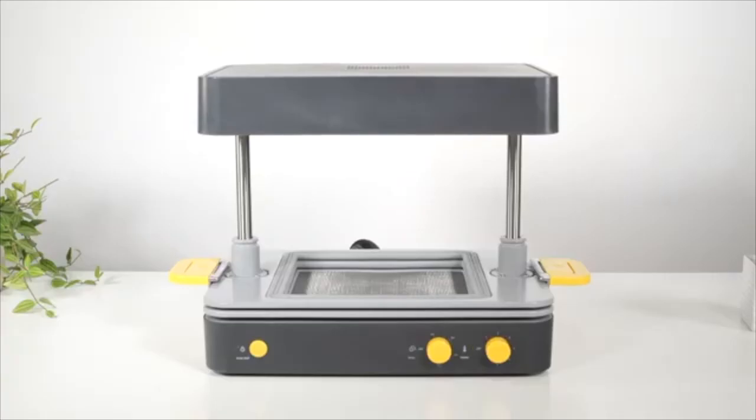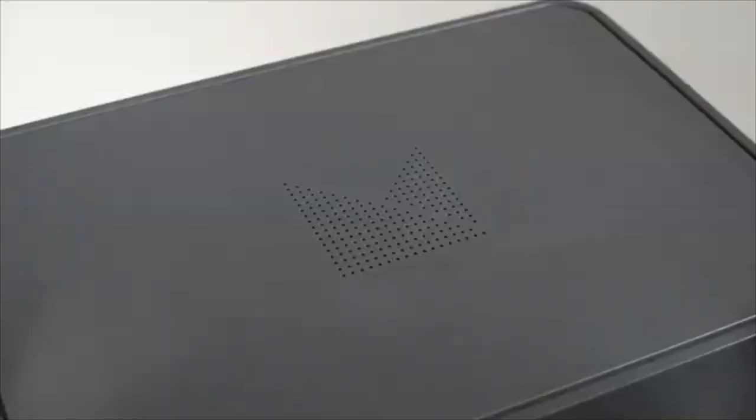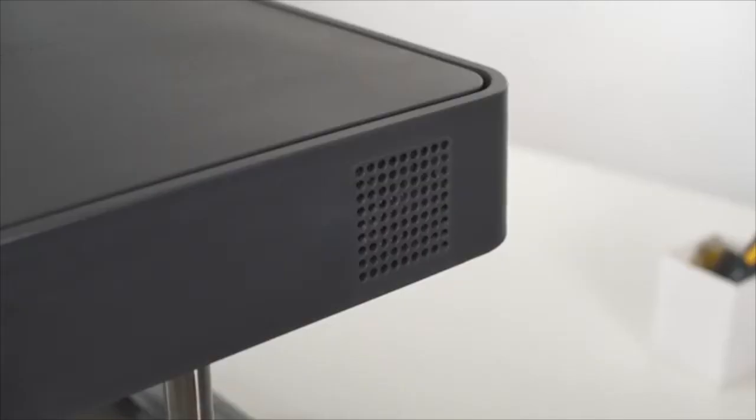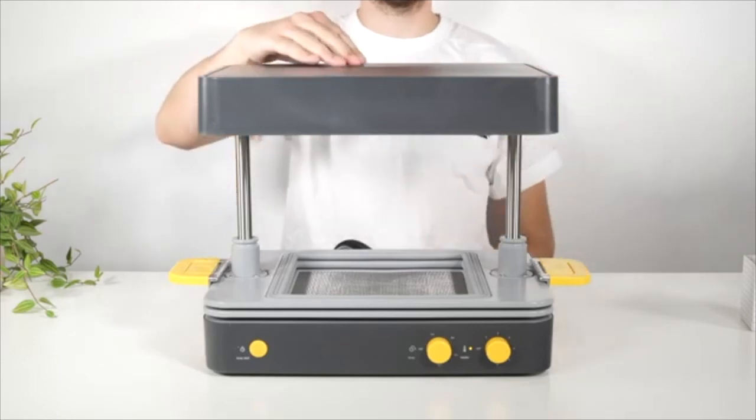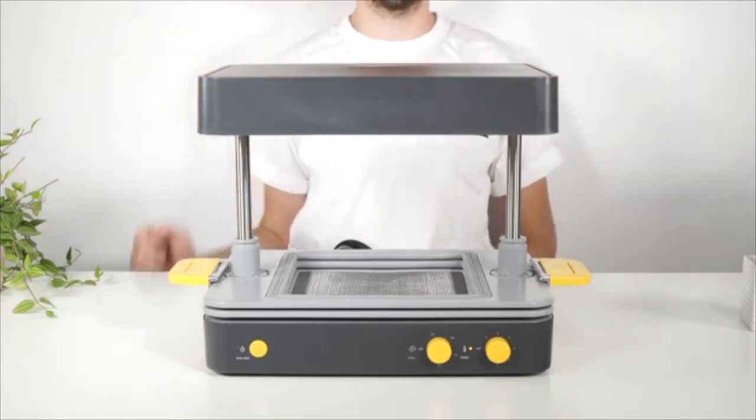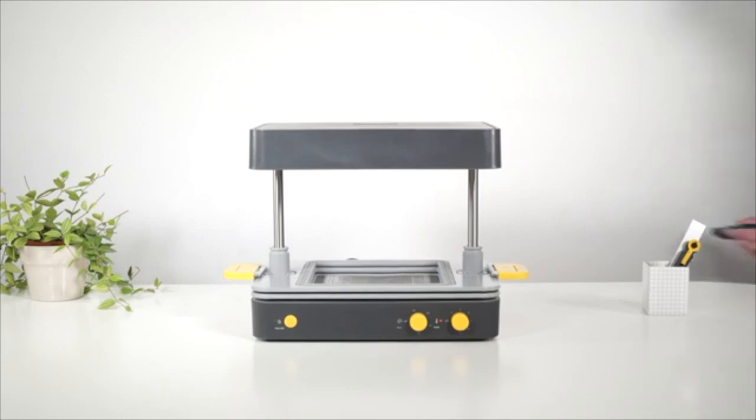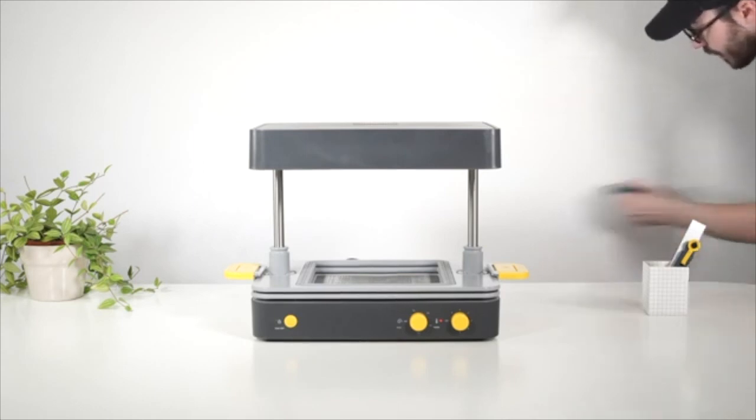The form box also has some built-in safety features to take note of when working with students. There are three vents on the top and sides of the machine which should never be obstructed. If the form box is left switched on and unused, a pre-warning alarm will sound after 10 minutes and the machine will shut itself off completely after 15 minutes of inactivity.